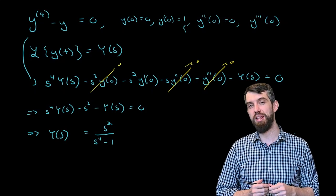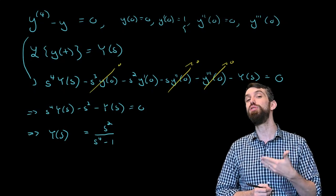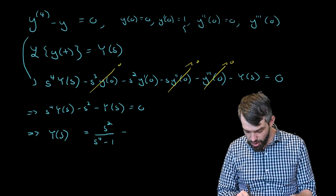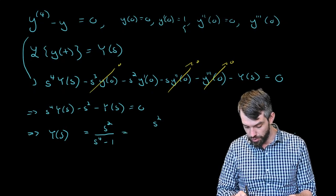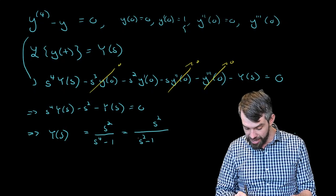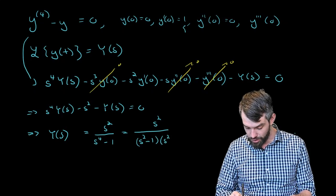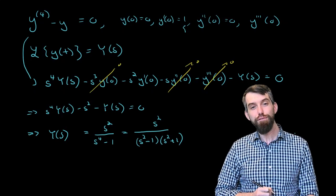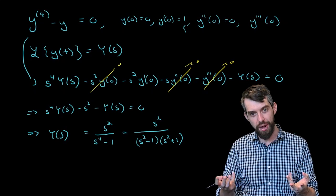The first thing I'm going to do is look in the denominator, and I note that I am able to factor that. The denominator, copying in place the numerator, is nothing but s squared minus one multiplied by s squared plus one. It's a difference of squares, the s squared and the one.